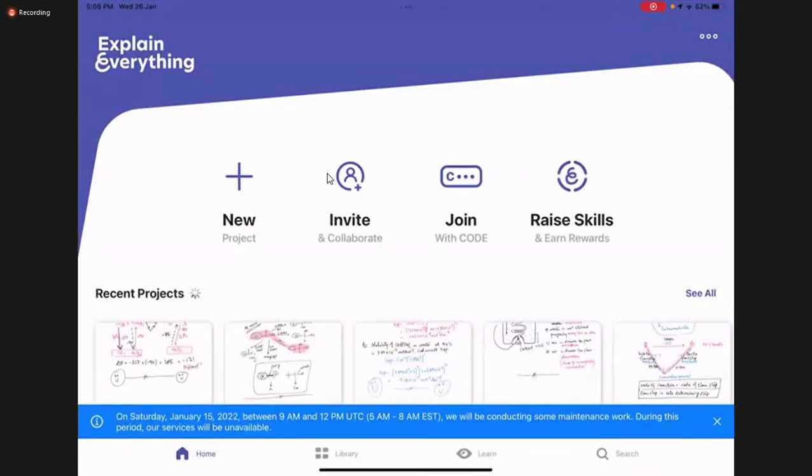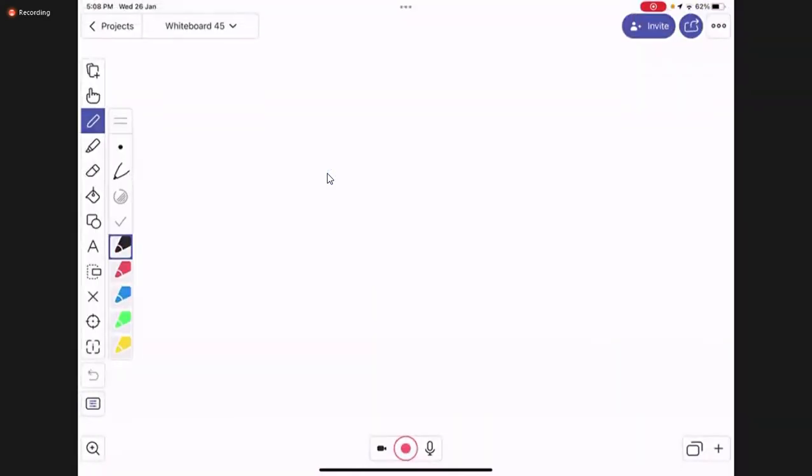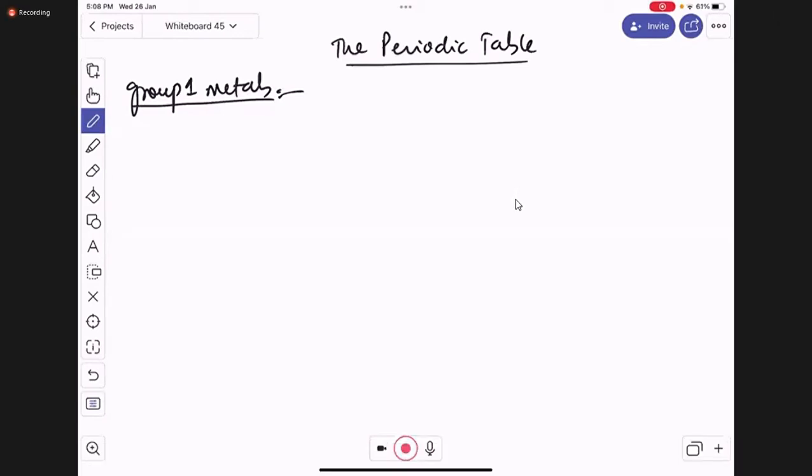It's the periodic table we are learning, group one. I hope you know that they're called alkali metals. So why are they called alkali metals?